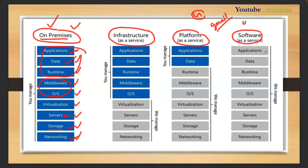Who manages the back end? Consider Amazon Prime — AWS, meaning Amazon, manages everything in the back end: networking, storage, servers, virtualization, operating systems, middleware, runtime, data, and applications. Everything is managed by the cloud service provider. For Office 365 and Microsoft Teams, end users are not developing any program — just registering and using. That is Software as a Service.